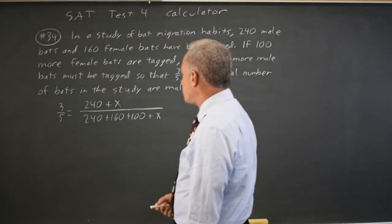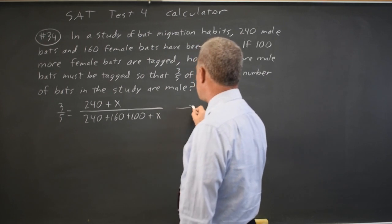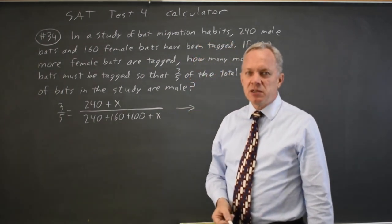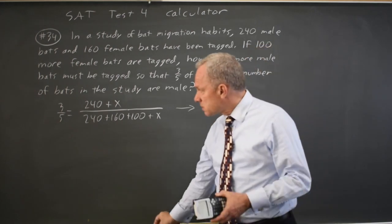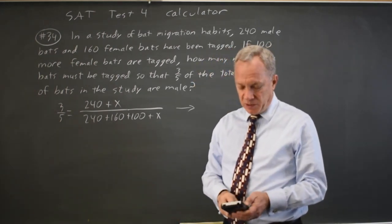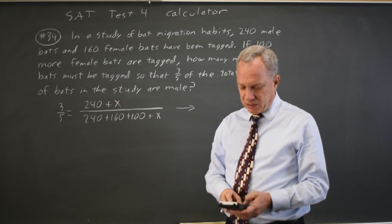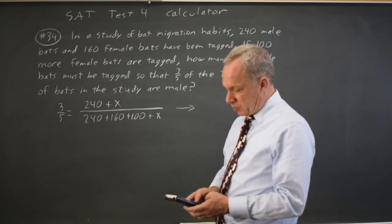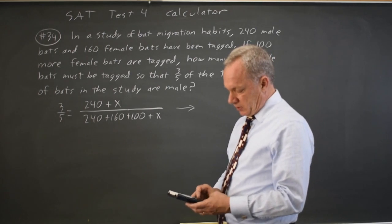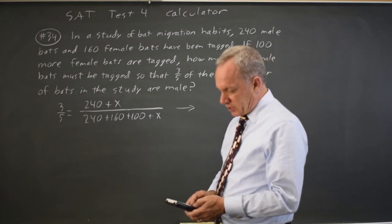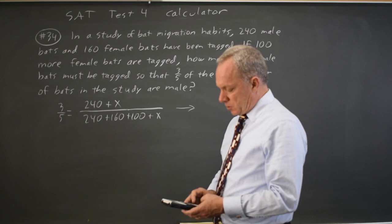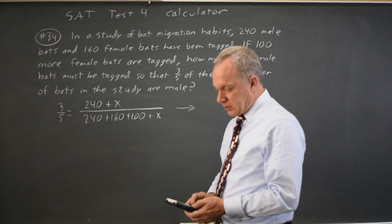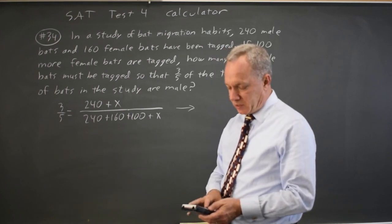And I could solve this by simplifying algebraically, cross multiply, etc. But an easier way, since this is an equation with only one variable, it's actually quite fast to put the left side three-fifths into y1. The right side, parentheses 240 plus x, close the parentheses, divide that by 240 plus 160 plus 100 plus x, close the parentheses on the denominator.